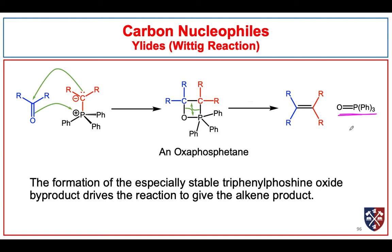It is the formation of this phosphorus-oxygen double bond that is very exothermic and helps drive this whole reaction to completion, and we get a carbon-carbon double bond — an alkene compound. This is a very common way to make alkenes.